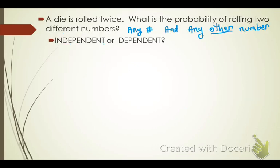A die is rolled twice. What is the probability of rolling two different numbers? What they're really asking is for the first roll to be any number, and the second roll to be any other number. The second roll is completely dependent upon what you rolled the first time, so these are dependent events.